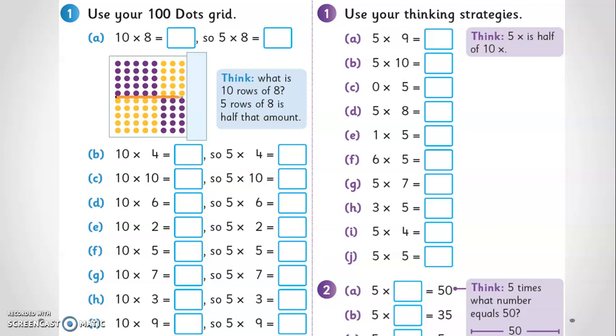This culminates in a final day where the questions are all abstract, with no supporting visuals, but where there are often prompts called think boxes to encourage the children to reflect on and connect with their learning in that unit. For example, think five times what number equals 50.